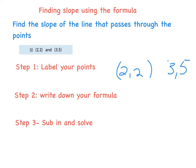So my point is (2, 2) and (3, 5), and I label them the exact same way as midpoint and distance: x₁, y₁, x₂, y₂. Step two: write down your formula, which again is given to you in your Junior Cert—you don't need to learn it off, but it does need to be written down each time.